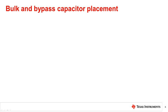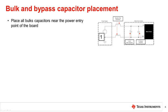Bulk and bypass capacitors are important components in a motor driver design. Bulk capacitors help reduce low frequency current transients and store charge to supply large currents required by the motor system. Bypass capacitors are used to minimize high frequency noise into the supply pin of the motor driver. Place all bulk capacitors near the power entry point of the board to ensure that low frequency transients are suppressed before they travel further into the PCB. When selecting bulk capacitance, always consider the highest current required by the motor system, supply voltage ripple, and the type of motor.